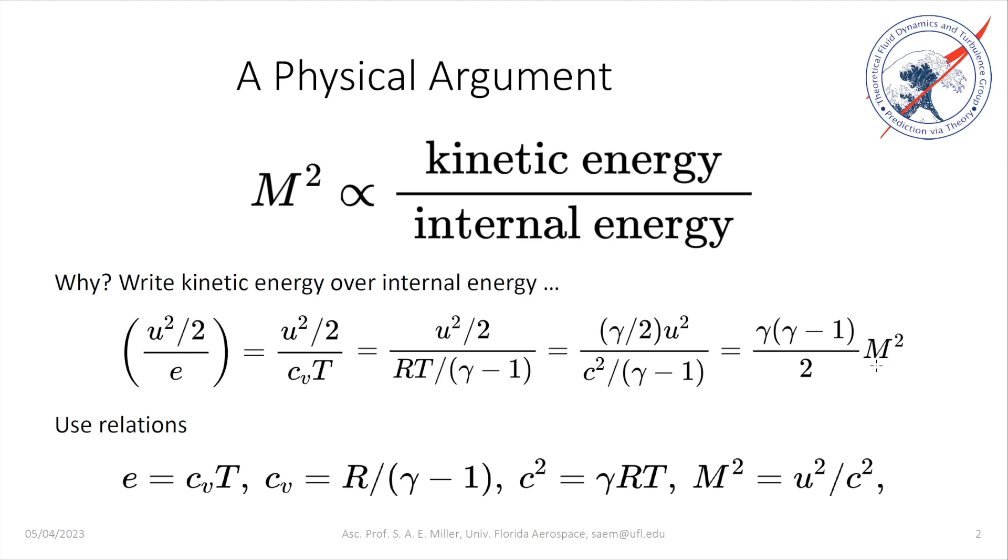We could write M squared equals U squared over 2 divided by the internal energy times 2 divided by gamma and gamma minus 1 to have inequality, but most people write it as a proportionality. This is an alternative way to think about flow fields that are high speed, and that the kinetic energy dominates the internal energy of the flow.